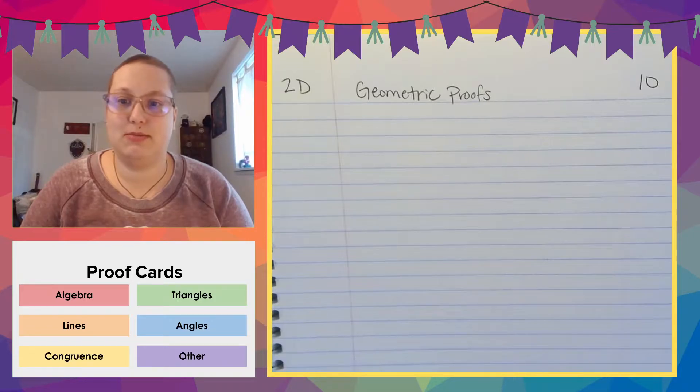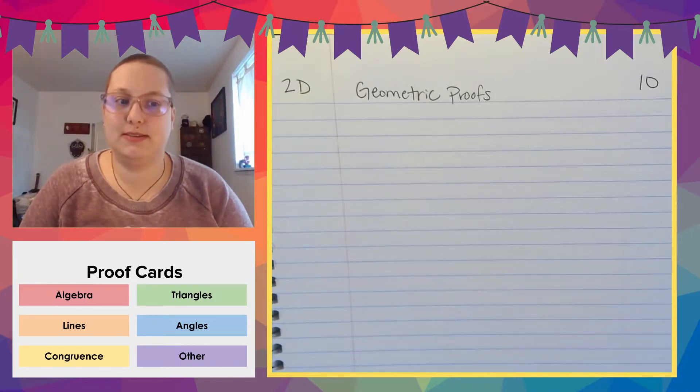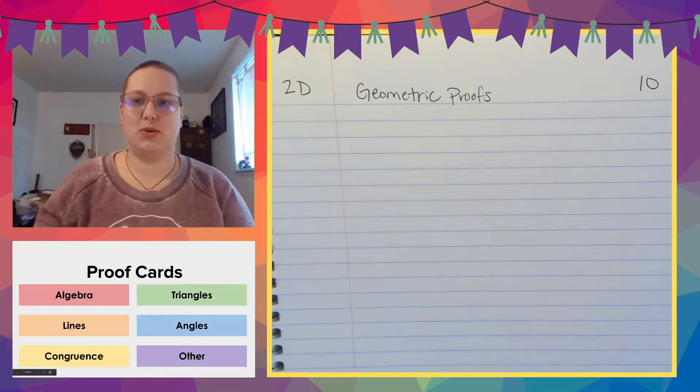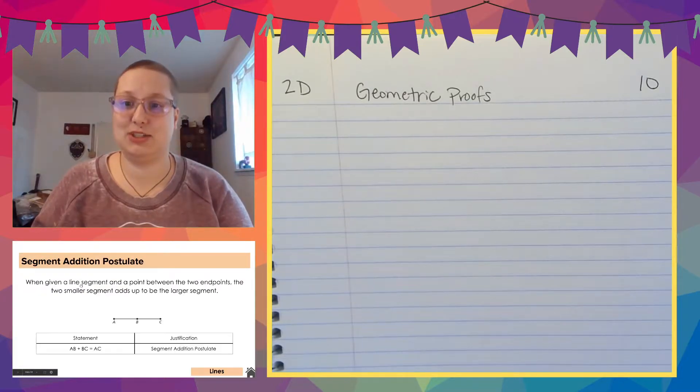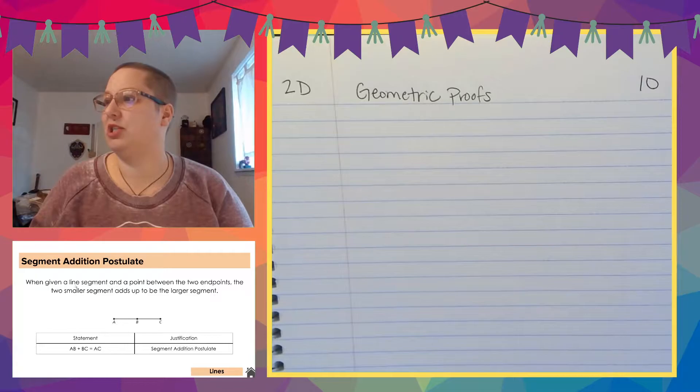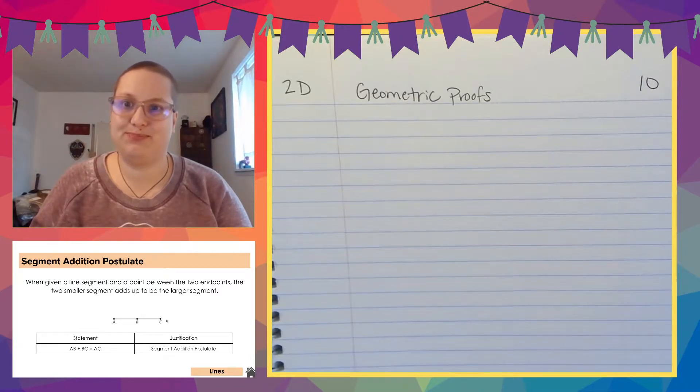But I do want to point out that I'm giving you some new cards. So one of those proof cards is here in lines. You get the segment addition postulate, which basically says that this section plus this section is the whole thing. Easy.